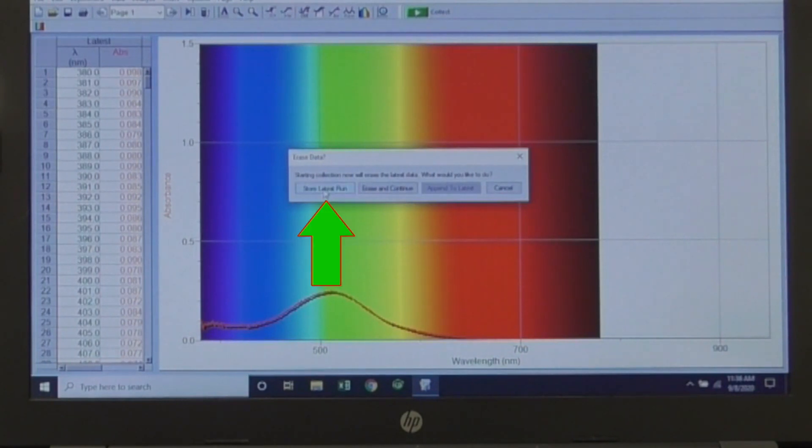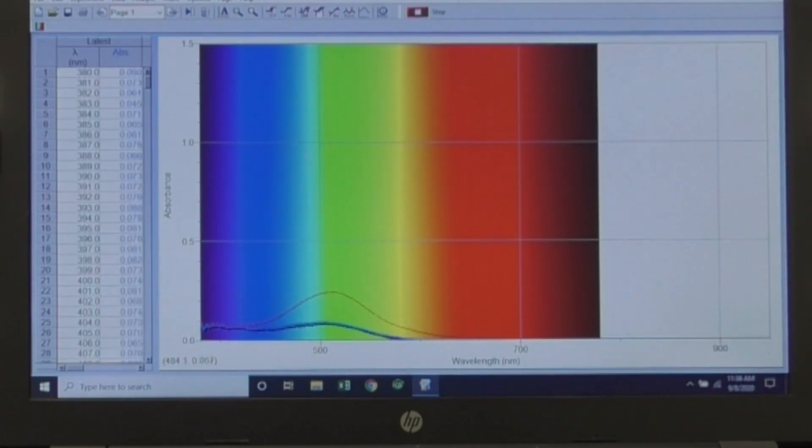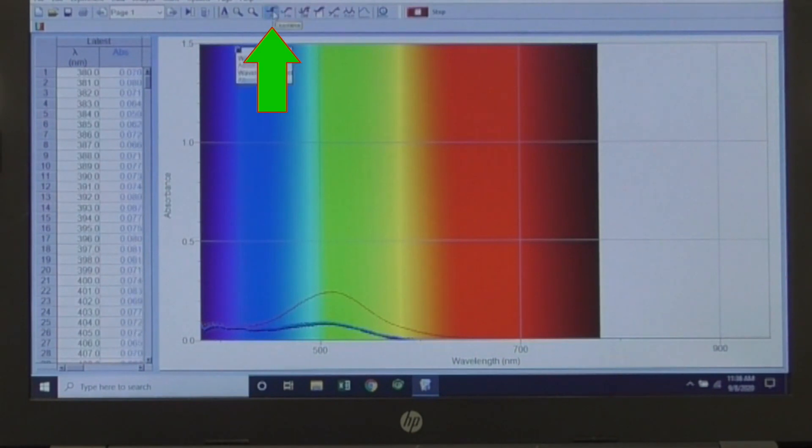Using the examine tool, write down the absorbances at 520 nanometers. Notice that this may not be the highest point of your peaks.